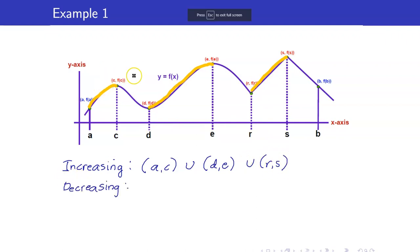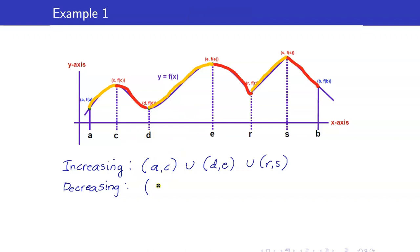Where is it decreasing? It's decreasing on these parts. What are these intervals for the red one? That's CD, this is ER, and SB. It is monotonic on the union of all of these intervals.